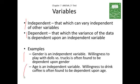Another example: age. Nothing you can do about it — it's an independent variable. But the willingness to drink coffee is often found to be dependent upon age. It doesn't have to be linearly dependent; it's just dependent upon age. So here are a couple of examples of independent and dependent variables. The dependent variables are a function of the independent variables.